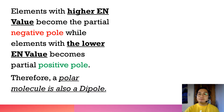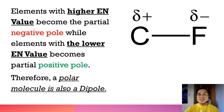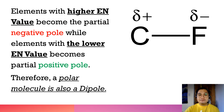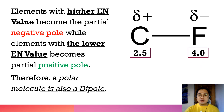A polar covalent bonding is also a dipole. During the dipole process, it creates two charges: the positive and the negative. Higher EN value becomes the partial negative pole and the lower EN value becomes the partial positive pole. For CF₄: carbon has an EN value of 2.5 and fluorine has an EN value of 4.0. Fluorine is the negative pole because it has the higher EN value, and carbon is the positive pole because it has the lower EN value.